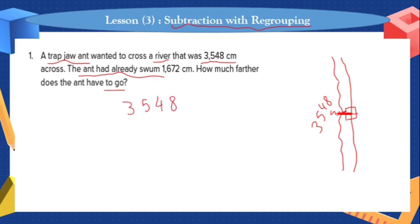When we do this minus, which method do we use — counting up, counting back, or normal minus? As you like, whichever method is comfortable for you. We'll do normal minus with regrouping. First ask: is 8 greater than 2? Yes — 8 is the greater number.